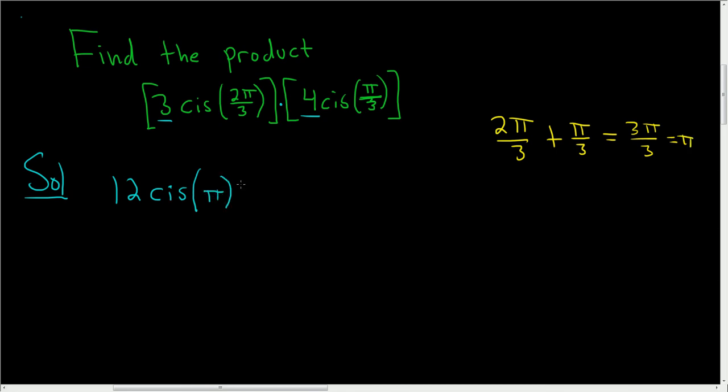So again, whenever you're multiplying complex numbers in trig form, just add up the angles.